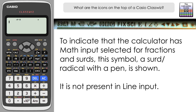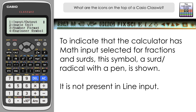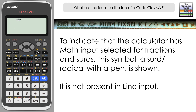If you are in line input output — let's change that: Shift, Setup, and 1 for input output, then select 3 for line input output — you can see that symbol has gone; it's not active in line input only. Once you select math input, shift setup 1, it comes back. It's also present if you select option 2, math input decimal output.